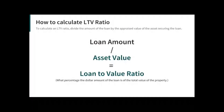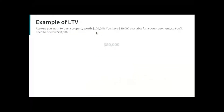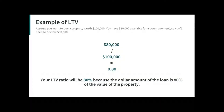To calculate an LTV ratio, you divide the amount of the loan by the appraised value of the asset securing the loan. For example, if you want to buy a property worth $100,000 and you have $20,000 available for a down payment, you'll need to borrow $80,000. You divide 80,000 by 100,000, and that gives you an 80% LTV — because the dollar amount of the loan is 80% of the actual value of the property.